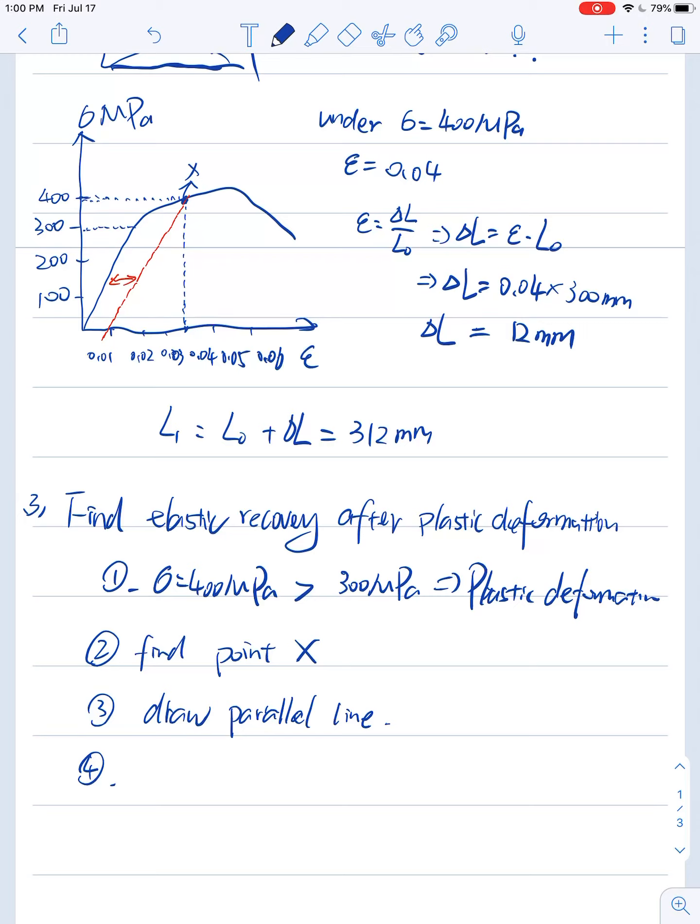Step four, we need to find the interception point Y of the line with the horizontal axis. In this case, here is our point Y, the interception here. So read out what is the value at point Y. At point Y, we have epsilon, which is a strain, equals 0.01.